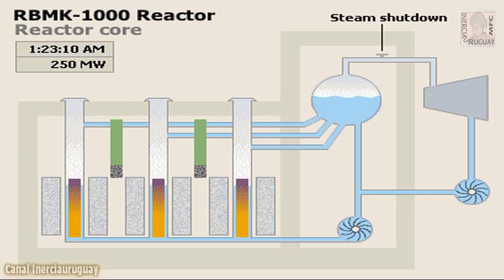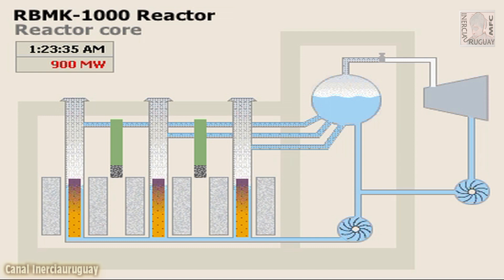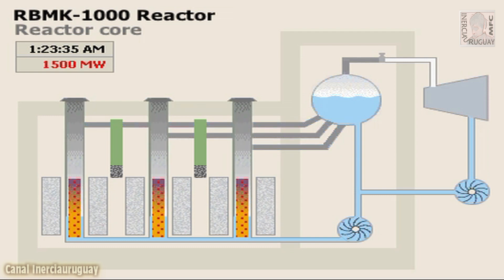Returning to the test procedure, the operator shut down steam to the single operating turbine generator. As the generator slowed, so did the cooling pumps. Inside the core, a buildup of steam was rapidly increasing the fission reaction. This generated yet more steam, which in turn generated more power. The reaction was now out of control.